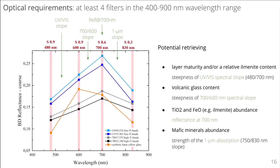Concerning the optical requirements useful to retrieve compositional information, we suggest the use of four filters centered at 480 nm, 600 nm, 700 nm, and 830 nm. The UV and visible spectral slope is indicative of layer maturity, grain size, and ilmenite content. High reflectance values joined with attenuated 600 to 700 nm slopes are potentially associated with pyroclastic materials. The higher the reflectance at 700 nm, the lower the titanium and iron oxide abundances. Finally, the 750 to 830 nm slope, pointing to the 1 µm absorption strength, is indicative of mafic mineral abundance.